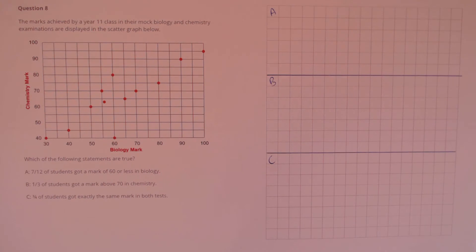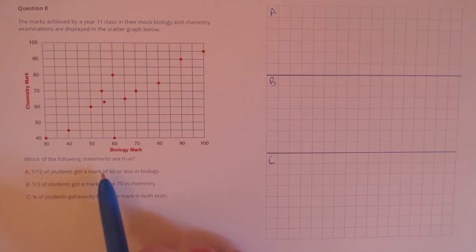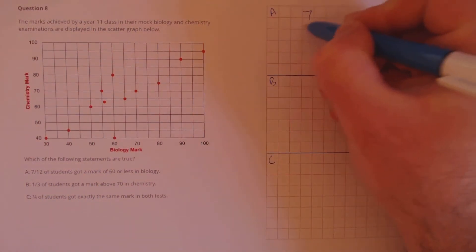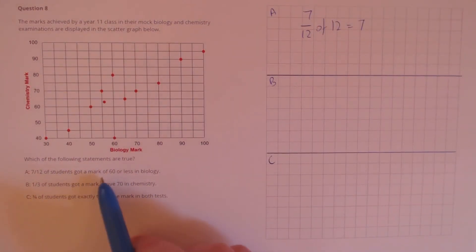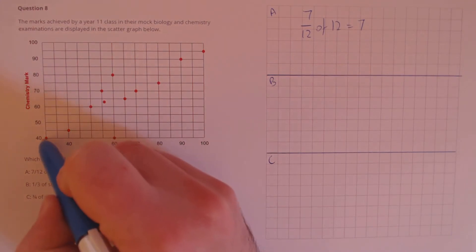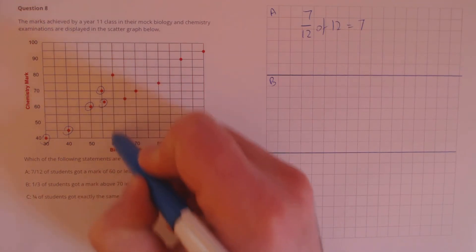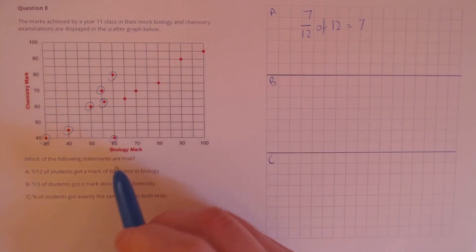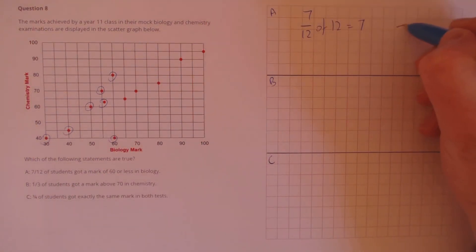Question 8. The marks achieved by the year 11 class in biology and chemistry are displayed in the scattergraph below. Which statements are true? Statement A: seven-twelfths of the students got a mark of 60 or less in biology. Seven-twelfths of 12 students is 7 students. Counting those who scored 60 or less — 30, 40, 50 and all those at 60 or below — we get 1, 2, 3, 4, 5, 6, 7. That matches the claim, so it's true.